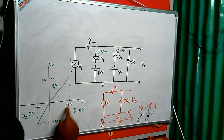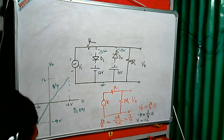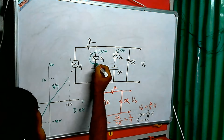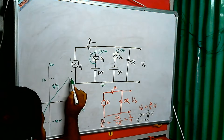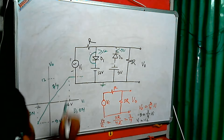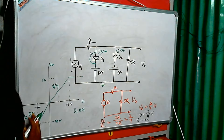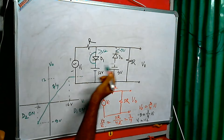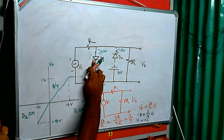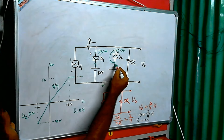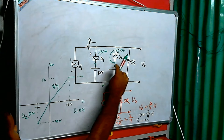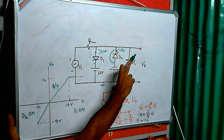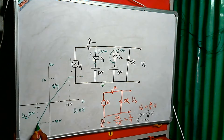Beyond 16 volts, D1 is on, and since we assume ideal diodes, the 12 volt source connects directly to the output. So the output saturates at 12 volts for input voltages above 16 volts. For input voltages less than minus 12 volts, D2 turns on and the minus 9 volt source connects directly to the output. So below minus 12 volts, the output saturates at minus 9 volts.